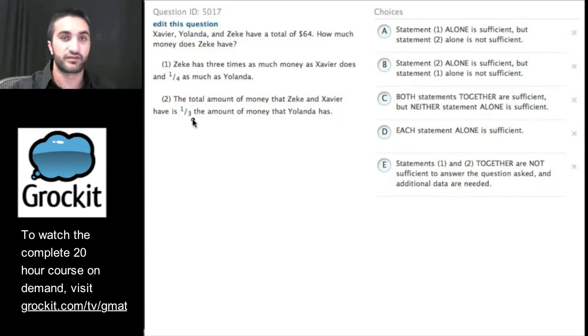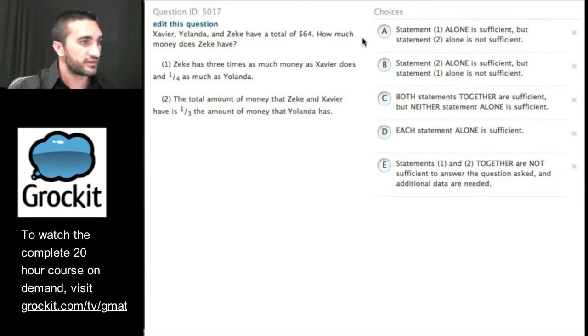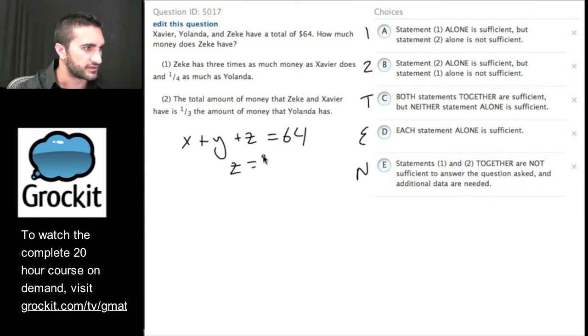So far, we've covered questions that cover the techniques that we talked about just a couple of minutes ago. I'm just going to do this real quickly. Make sure it has as much bandwidth as possible. So, we have a data sufficiency question. Go ahead and get yourself set up to work this question. And let's find out if it's a data sufficiency yes or no question. Xavier, Yolanda, and Zeke have a total of $64. How much money does Zeke have?